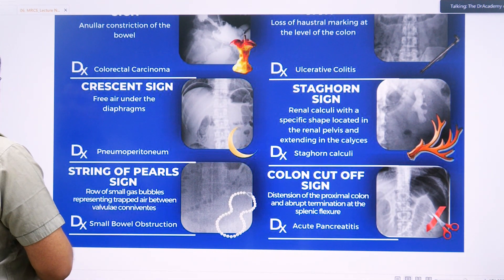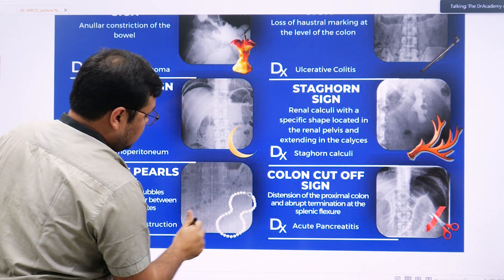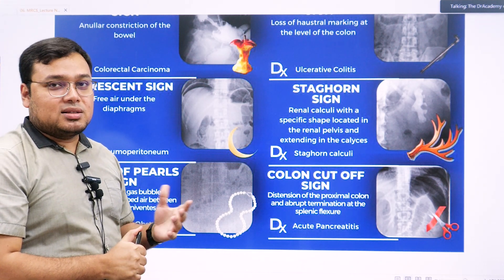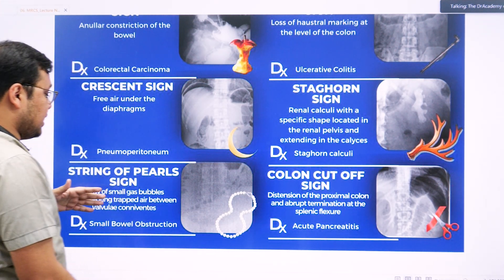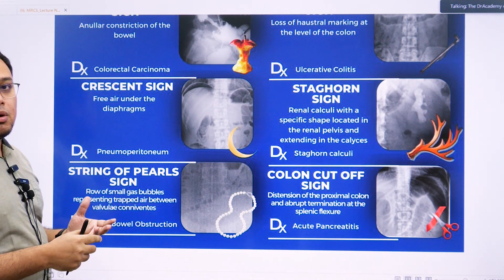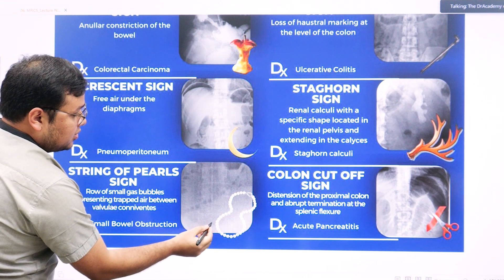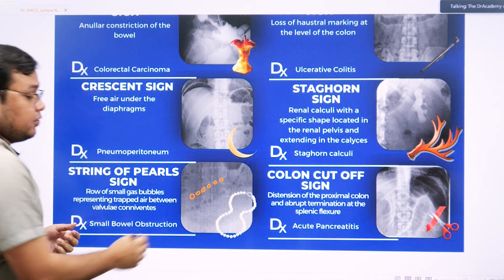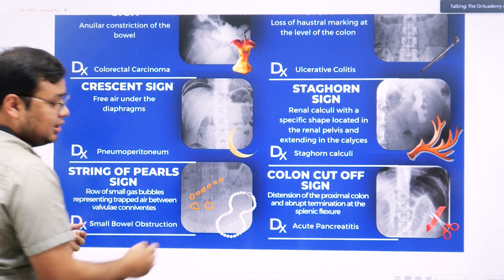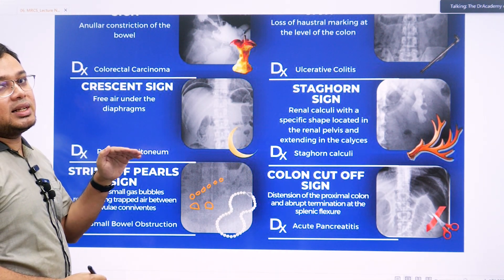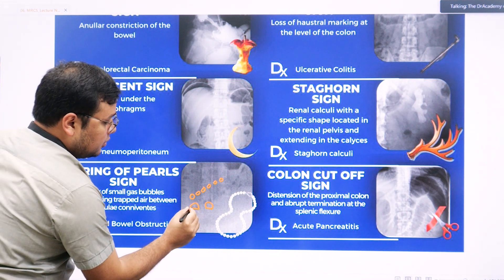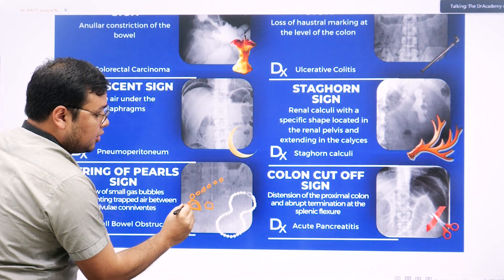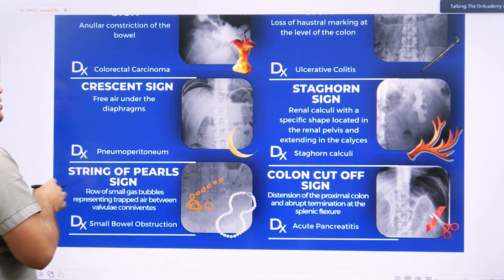The string of pearls sign is found in small bowel obstruction. The valvulae conniventes will be lost because of the small bowel obstruction. It will look like beading — this is called the string of pearls. Due to obstruction, check for the air-fluid level. The transverse horizontal line is significant because of fluid settling by gravity, and the upper convex part represents gas. For exam purposes, look for the crescent sign and features of small and large bowel obstruction. Air-fluid levels in small bowel obstruction are found centrally, while large bowel obstruction is found laterally.